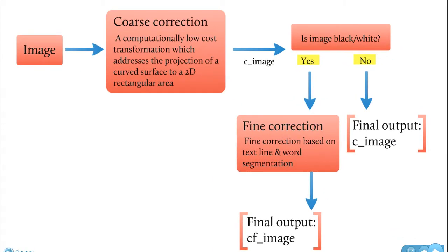Because if you start with an image and then it does the coarse correction, which is a low-cost transformation, and you end up with as output something called C-image, then it looks whether the image is black and white, and if it isn't, so when you've used a color or a grayscale image, you get the final output.